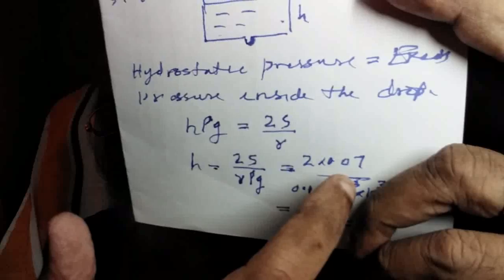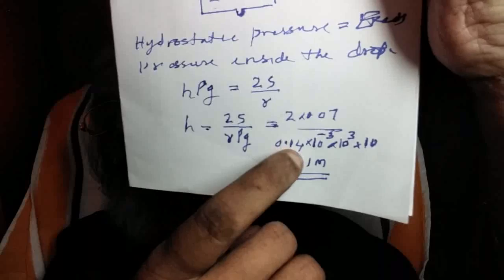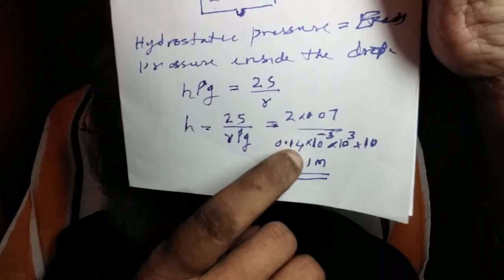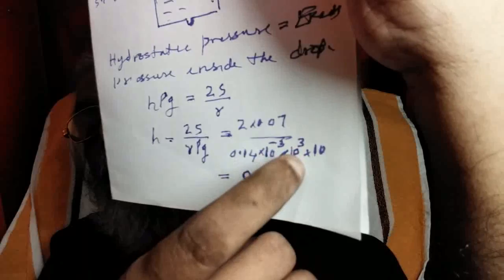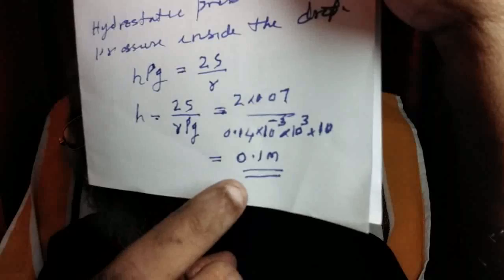From which h equals 2S divided by r·ρ·g. This gives 2 × 0.07 divided by radius 0.14 mm (0.14 × 10⁻³ m), multiplied by density of water 10³ kg/m³, multiplied by g = 10. The answer is 0.1 meter, or 10 cm height.